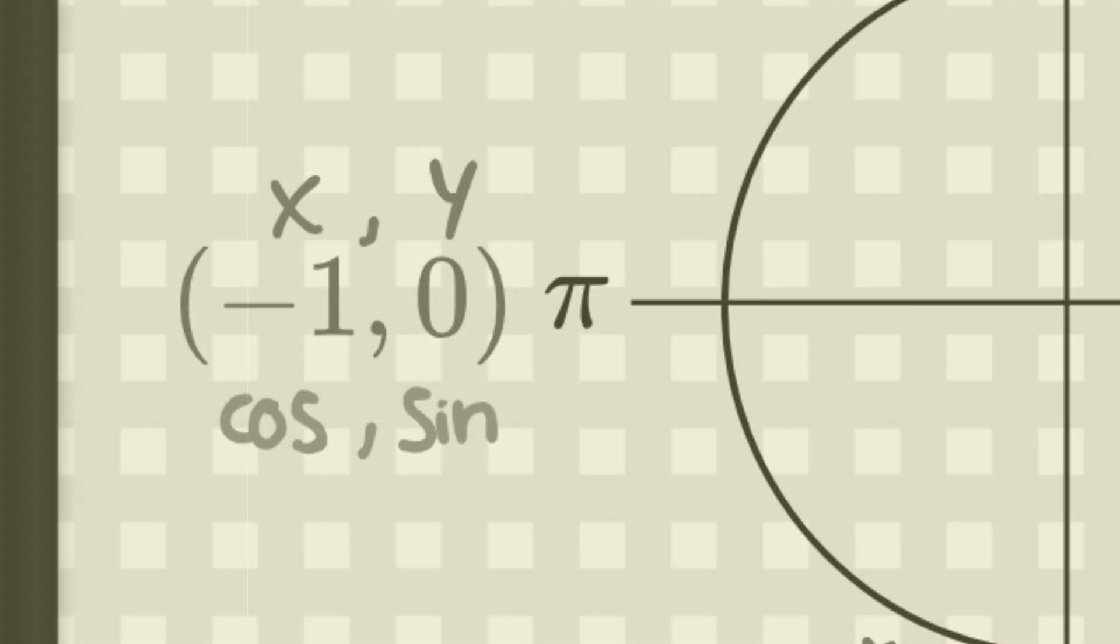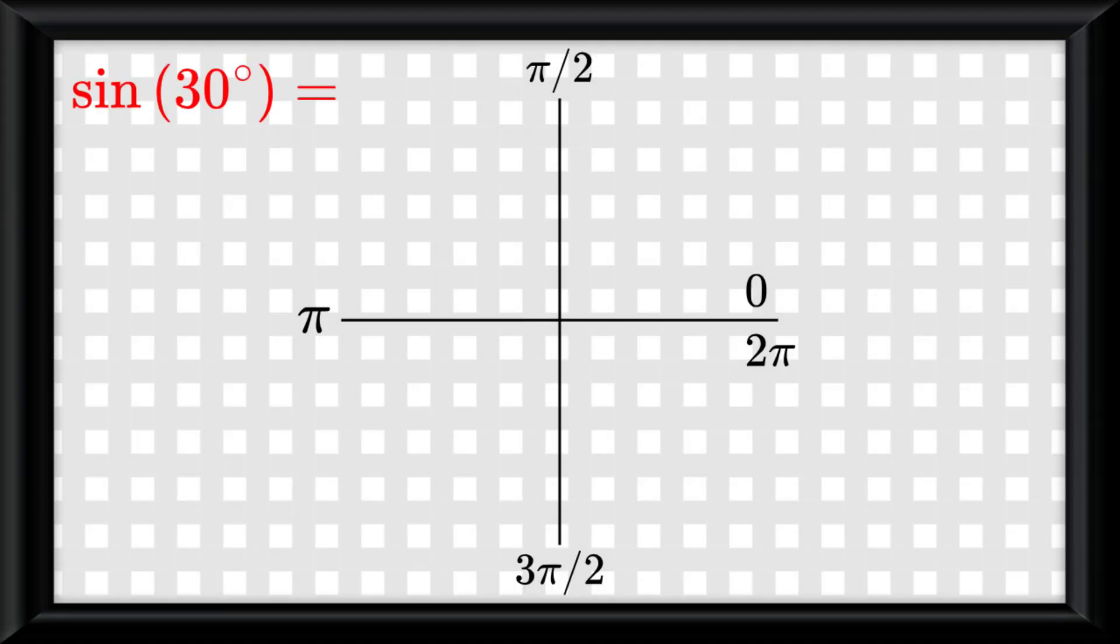We already know how to find sine, cosine, and tangent of quadrantal angles, but what if we have something like sine of 30 degrees? Let's draw a line. Draw the 30 degrees angle, but this time we draw a line to make a triangle.